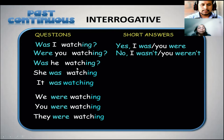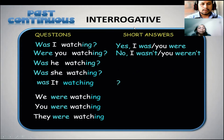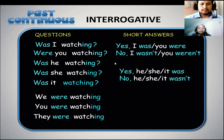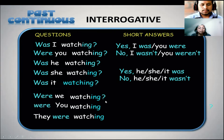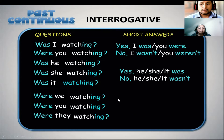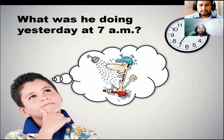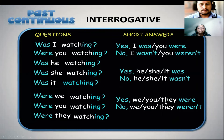He was watching. What about the short answers? Yes, he, she, it was. No, he, she, it wasn't. And then we have the plural subjects: Were we watching a movie? Were you watching? Were they watching? Yes, we, you, or they were. No, we, you, they weren't.